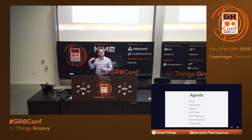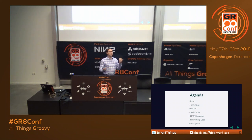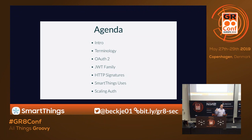We'll do a quick intro, tell you a little bit about what SmartThings is so you get a sense of what we deal with. We'll do really quick terminology, talk about OAuth 2, the JWT family, HTTP signatures, and how we use those technologies at SmartThings. At the end, we'll go through tips and tricks for scaling auth — things work at 1,000 users, then stop working at a million, then at 10 million a different set breaks.